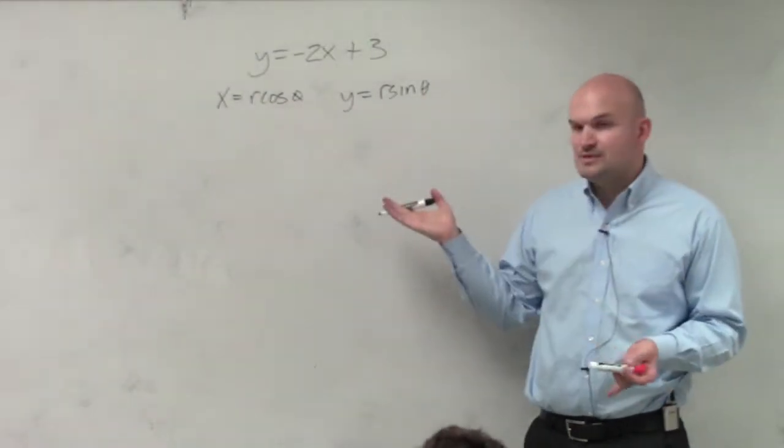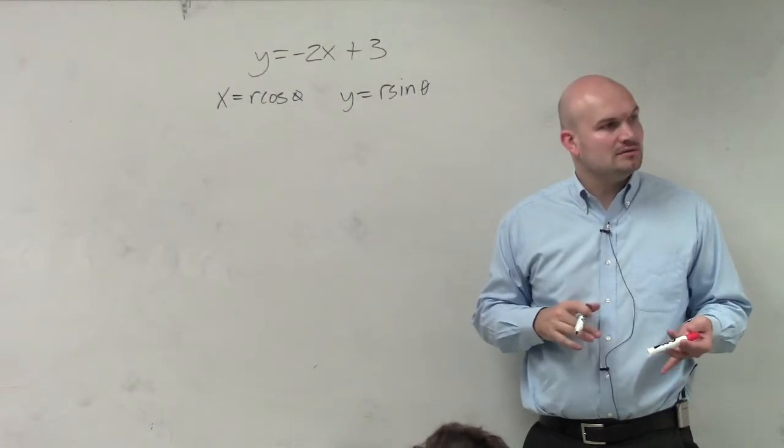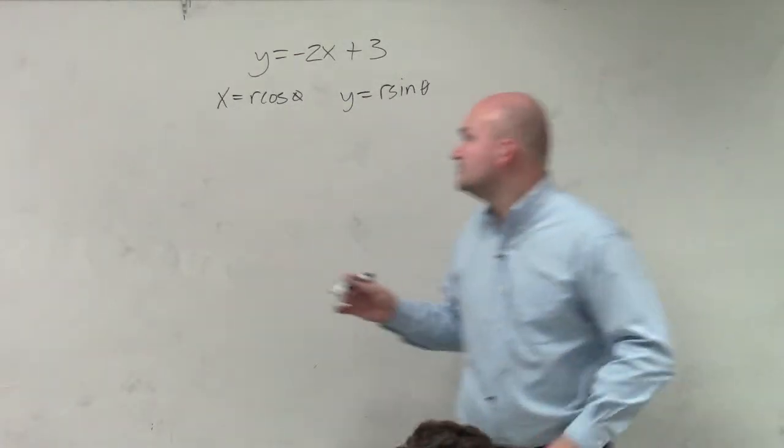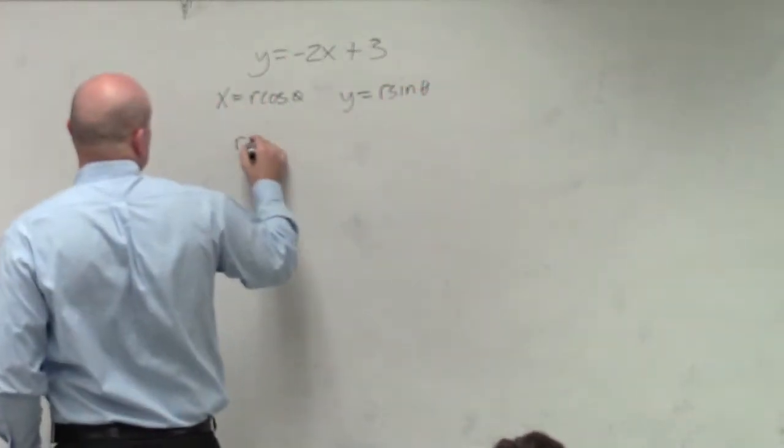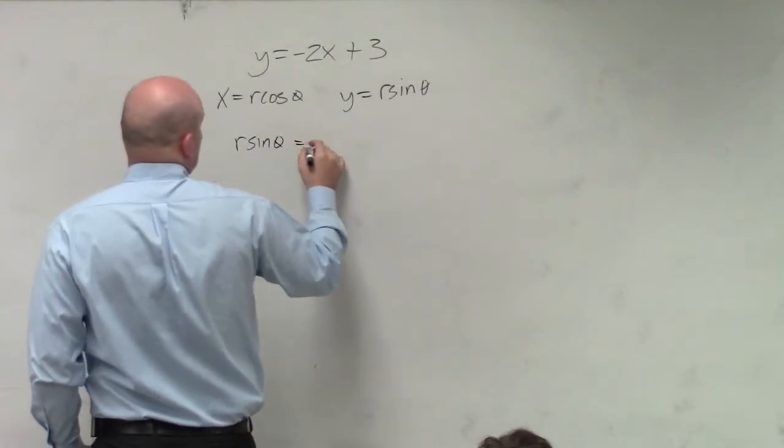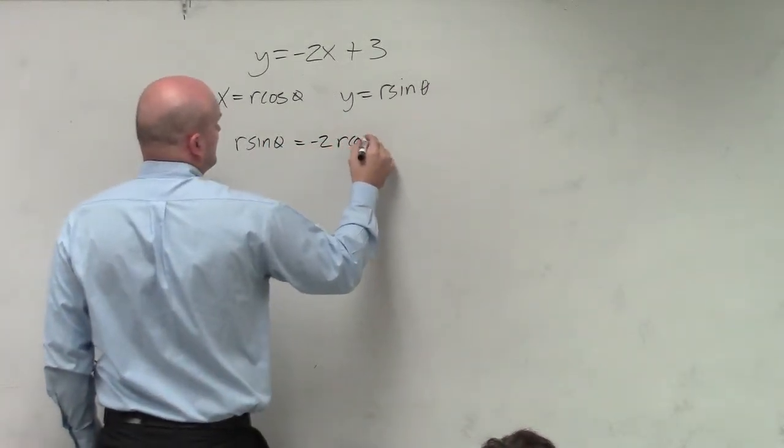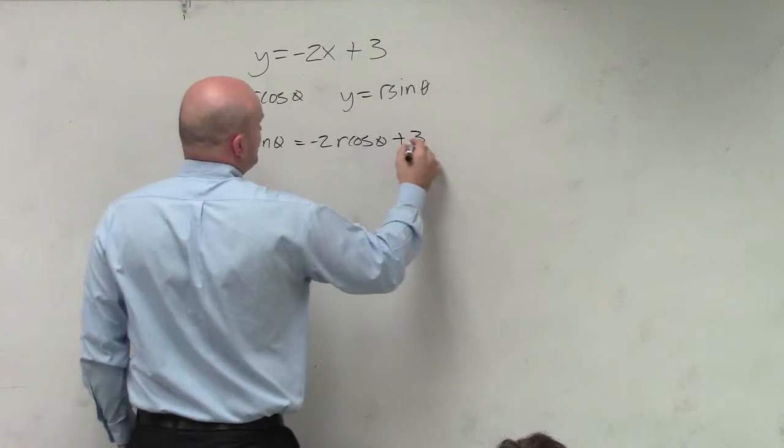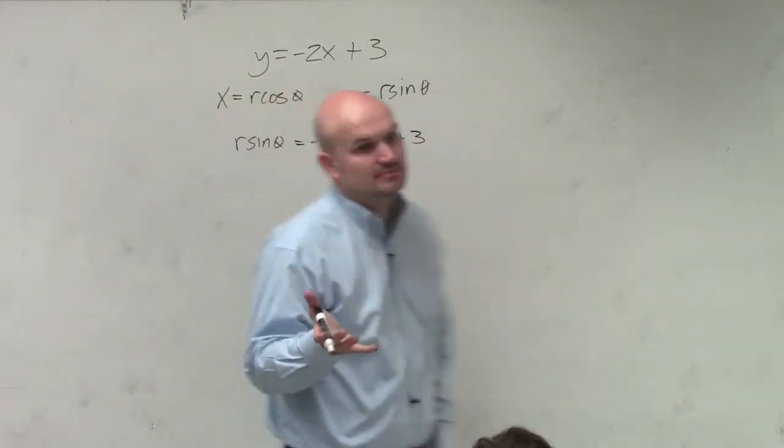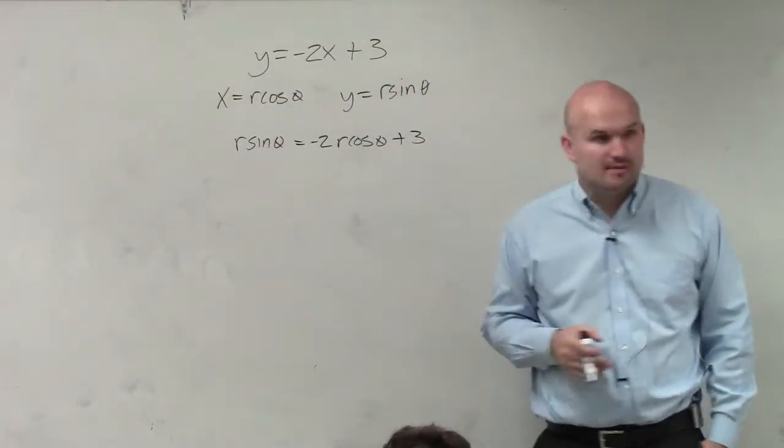So wherever we see an x and y, let's replace them with r cosine theta or r sine theta. And technically, that is an equation in polar form.